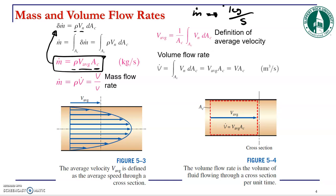If you take the integral of both sides and assume that density stays constant — which is true for liquids — and the cross-sectional area also stays constant, these two parameters come out of the integral. What remains is the integral of V_N dA_c.